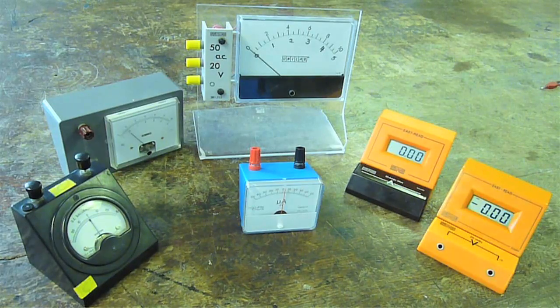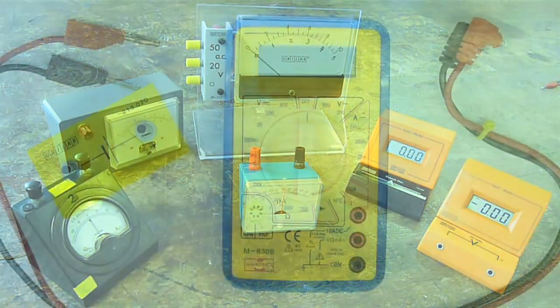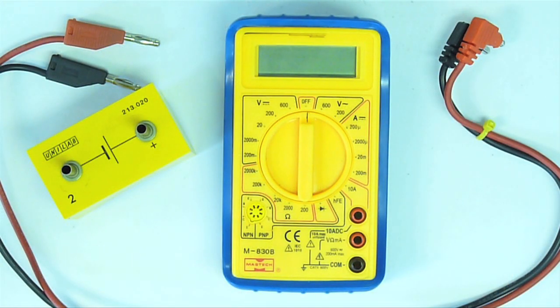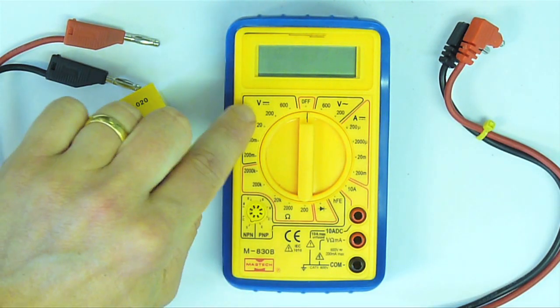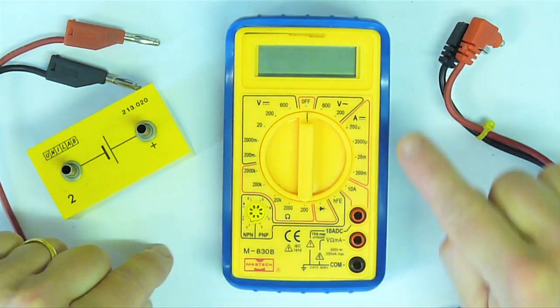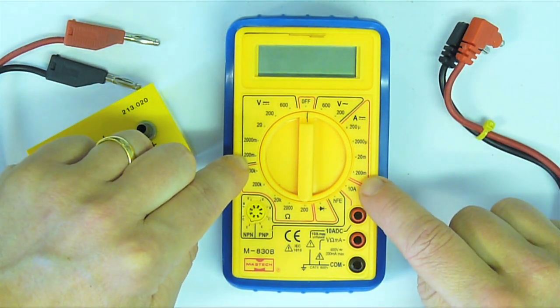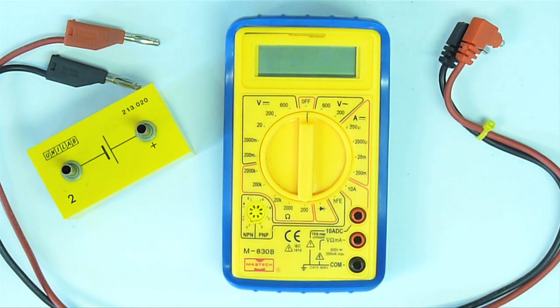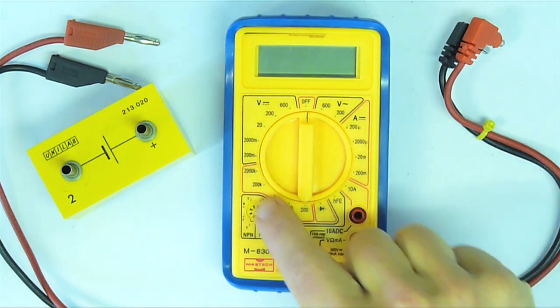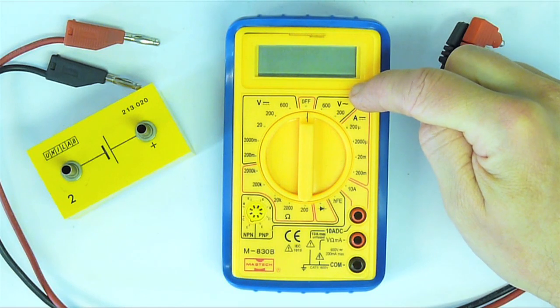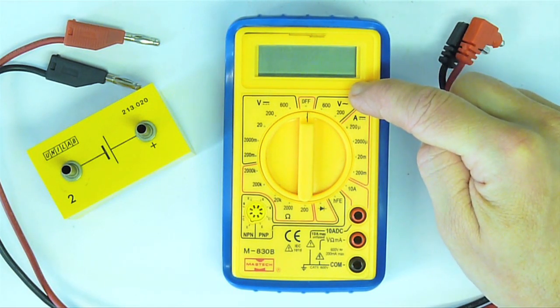We can replace all of these instruments with just this one device, a multimeter. It lets us measure both voltage and current over a wide range of values. It's called a multimeter because it combines many instruments in one. We can also use it to measure resistance and AC voltage, amongst other things.